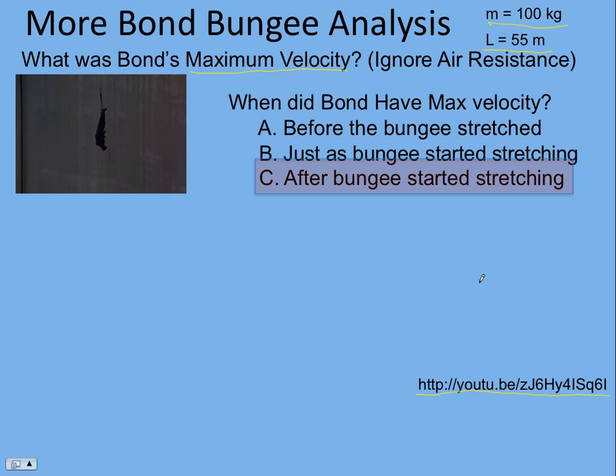Here's the answer: it's C, after the bungee started to stretch. A lot of people think it's going to be B, but it is not. The reason is there's still gravity pulling down on him, so he won't start to slow down until the bungee pulls up with a force that's greater than gravity. The maximum velocity occurs when the upward pull of the bungee is equal to the downward pull of gravity, Bond's weight. That would be when the acceleration is zero. That's a tough idea.